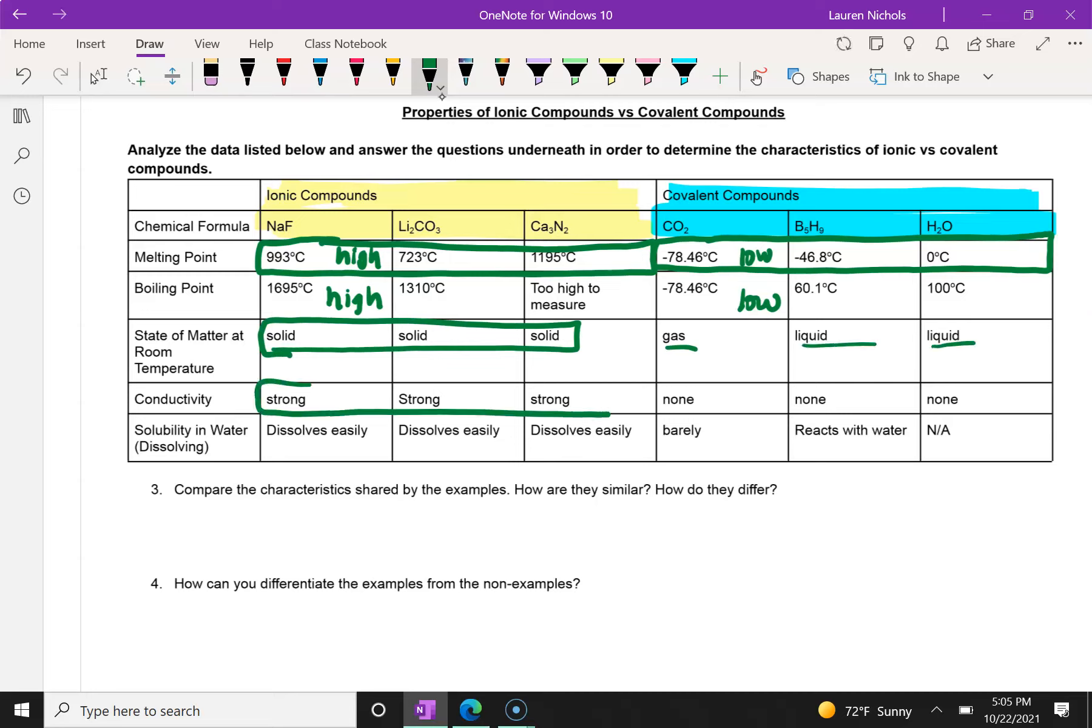These are strongly conductive, meaning they're really good conductors of electricity, but these are not conductive at all. And it looks like ionic compounds dissolve in water. Covalent compounds do not. So we can say that they don't really have any similar characteristics between ionic and covalent. So really we should focus on how do they differ.